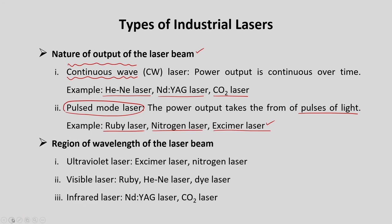Lasers can also be classified by wavelength region. Visible lasers have wavelengths between 400 and 700 nanometers, such as ruby, HeNe, and dye lasers. Ultraviolet lasers have wavelengths below 400 nanometers. Infrared lasers have higher wavelengths, and examples include Nd:YAG and CO2 lasers.